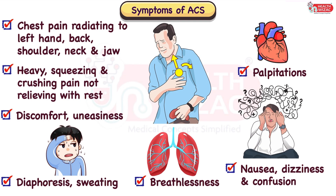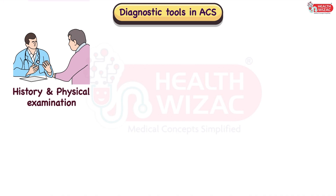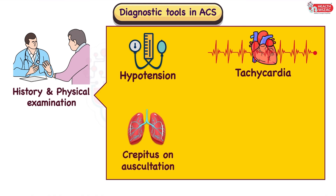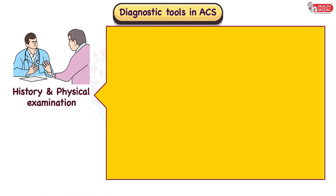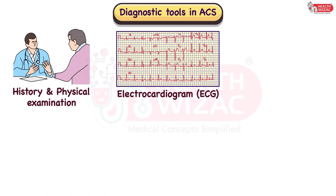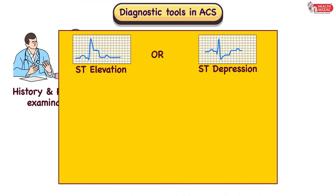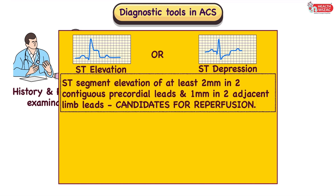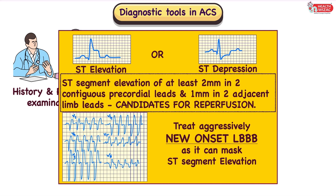The diagnosis of ACS primarily starts with symptoms along with history and physical examination, which may reveal hypotension, tachycardia, lung crepitations on auscultation, orthopnea, and edema feet. The next step is to get a 12-lead ECG done as early as possible. ECG may show ST-T changes in the form of either ST elevation or ST depression along with rhythm abnormalities, but sometimes it may be normal. A patient with ST segment elevation of at least 2 mm in 2 contiguous precordial leads and 1 mm in 2 adjacent limb leads is considered a candidate for reperfusion therapy. A new onset LBBB or left bundle branch block along with symptoms of ACS should be treated aggressively like ACS, as LBBB may mask ST-T elevation or depression.